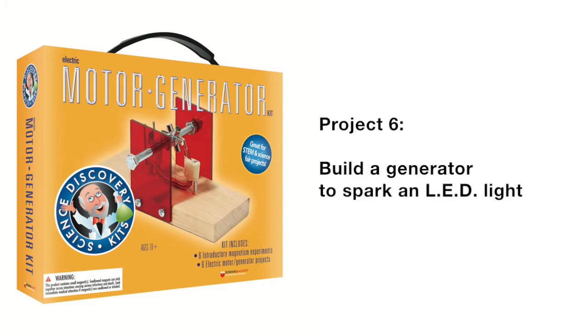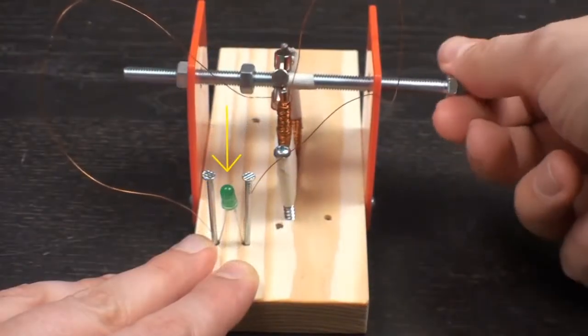Today we will be assembling a generator that powers a light bulb, project number six of Dowling Magnet's Science Discovery Motor Generator Kit. Here's the project in action.